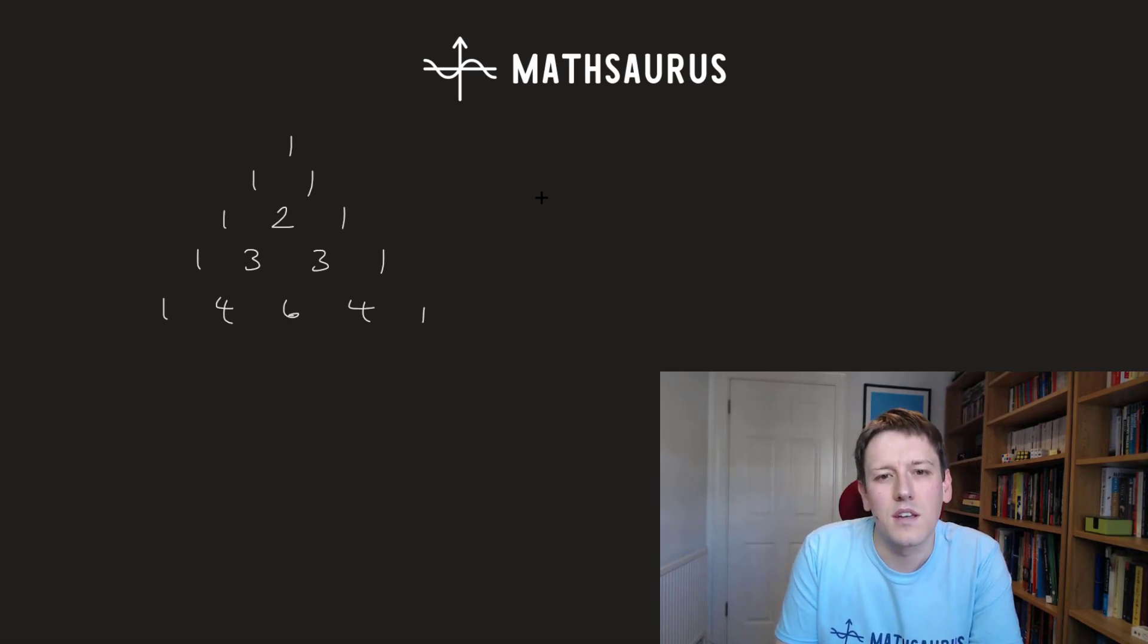The numbers in each row, so like 1, 1 here is just 11, 1, 2, 1, if I wrote it out as a number, 1, 2, 1, that's 11 squared.